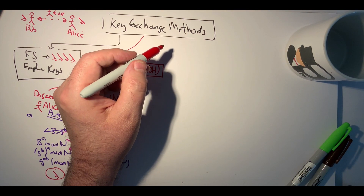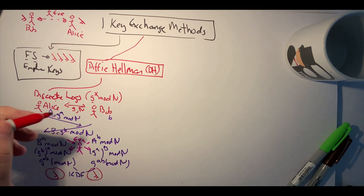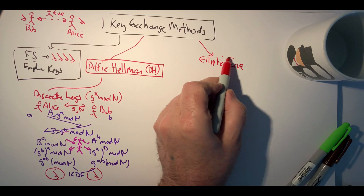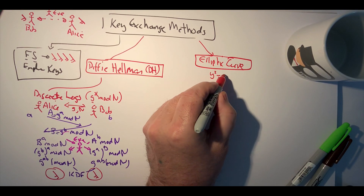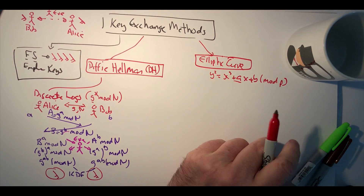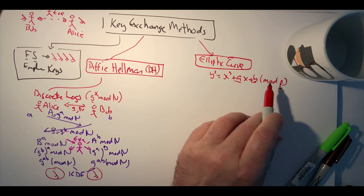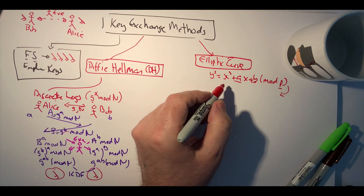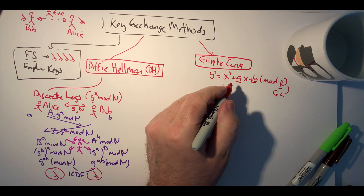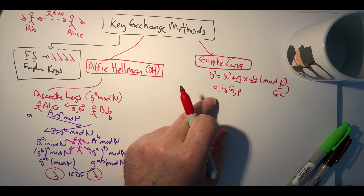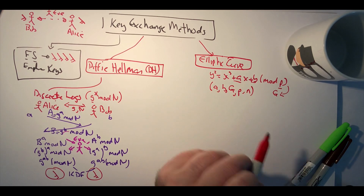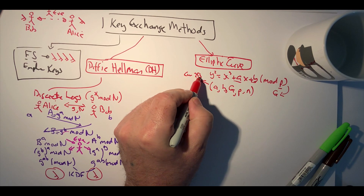An improved method often used is the elliptic curve method. With this, we have a curve defined by values a, b, p (the prime), which leads to our curve. The curve has a base point called g, so overall the curve is defined by a, b, g, and p. There is also a value n called the order, which is the number of points on the curve.